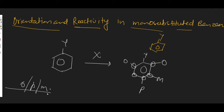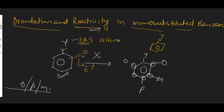Now let's talk about reactivity. Reactivity means that in aromatic electrophilic substitution, any substituent attached to benzene will either increase or decrease its reactivity towards electrophiles. Suppose your Y-substituent is an electron-releasing group, then electron density on benzene will increase, nucleophilic character will increase, and it will be able to attack with the electrophile more easily. Such groups will activate the ring, i.e., increase reactivity. But on the opposite, if there is an electron-withdrawing group, it can decrease reactivity. So reactivity means either activation or deactivation of the ring.